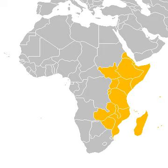Djibouti, Eritrea, Ethiopia and Somalia, collectively known as the Horn of Africa, are the easternmost projection of the African continent, and are sometimes considered a separate region from East Africa.